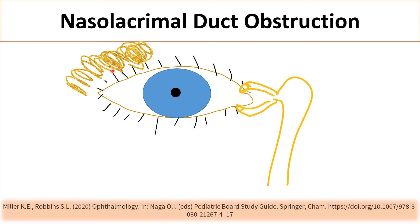This is the lacrimal system. The lacrimal gland produces tears and the tears will travel in front of the eye by the process of blinking and spread all over to provide the eye with moisture and prevents dryness of the cornea and conjunctiva.